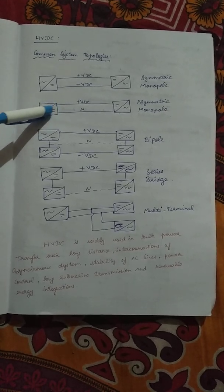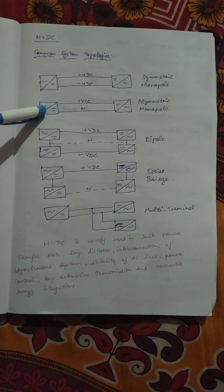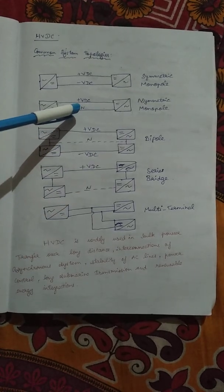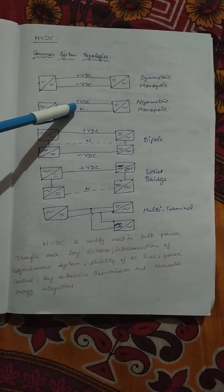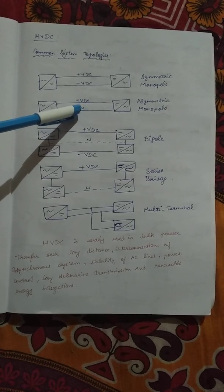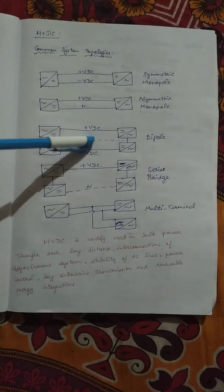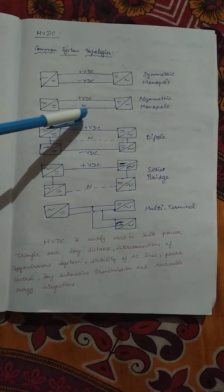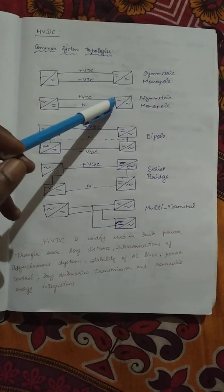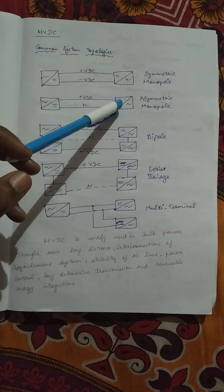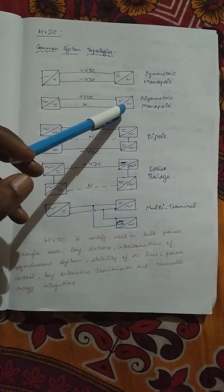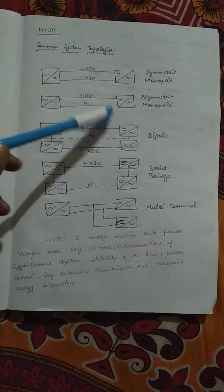The asymmetric monopole has an AC bus connected to thyristor, rectifier, or IGBT systems that convert to DC. In a asymmetric monopole system, one line carries positive or negative voltage and the other is neutral — marked as 'N' — meaning one end is totally grounded. The DC flows to the other end where it is converted back to AC by thyristor or IGBT, feeding the AC bus system.